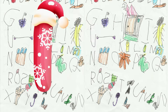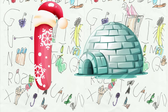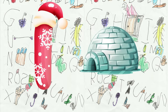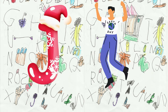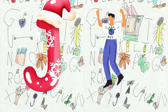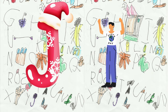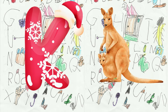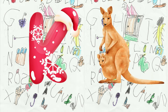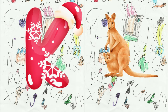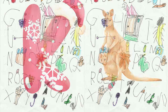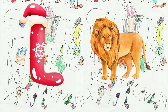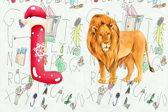I is for igloo, i-i-igloo. J is for jump, j-j-jump. K is for kangaroo, k-k-kangaroo. L is for lion, l-l-lion.